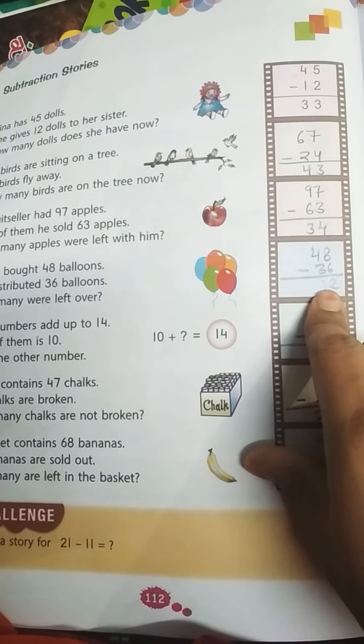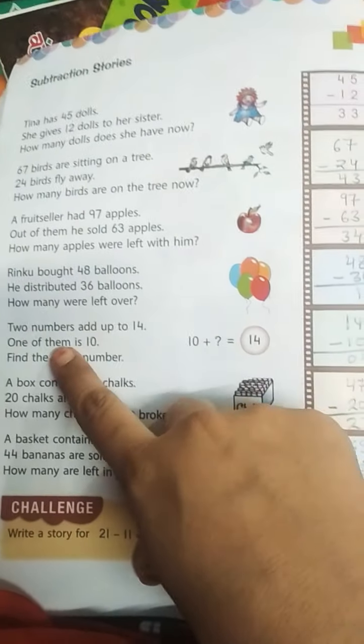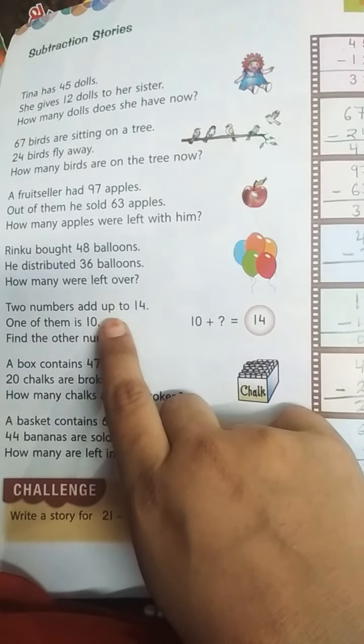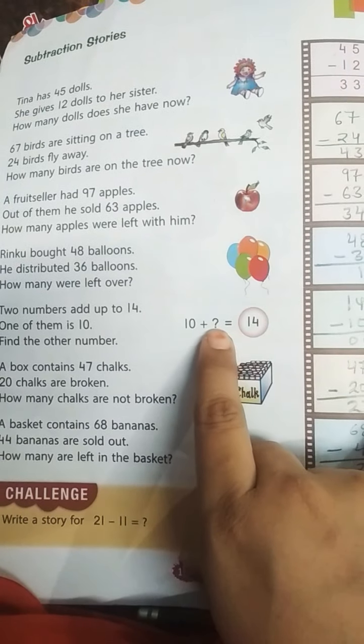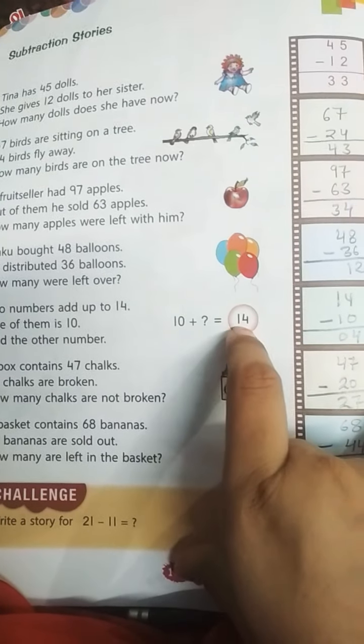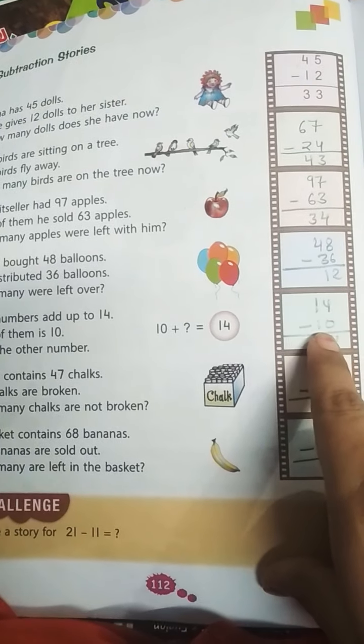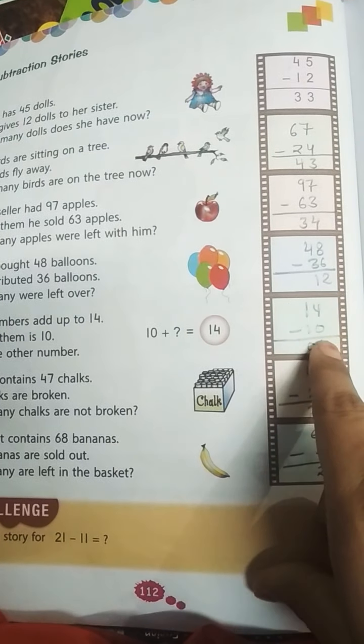Two numbers add up to 14. One of them is 10. Find the other number. So 14 minus 10. 4 minus 0 is 4, and 1 minus 1 is 0.